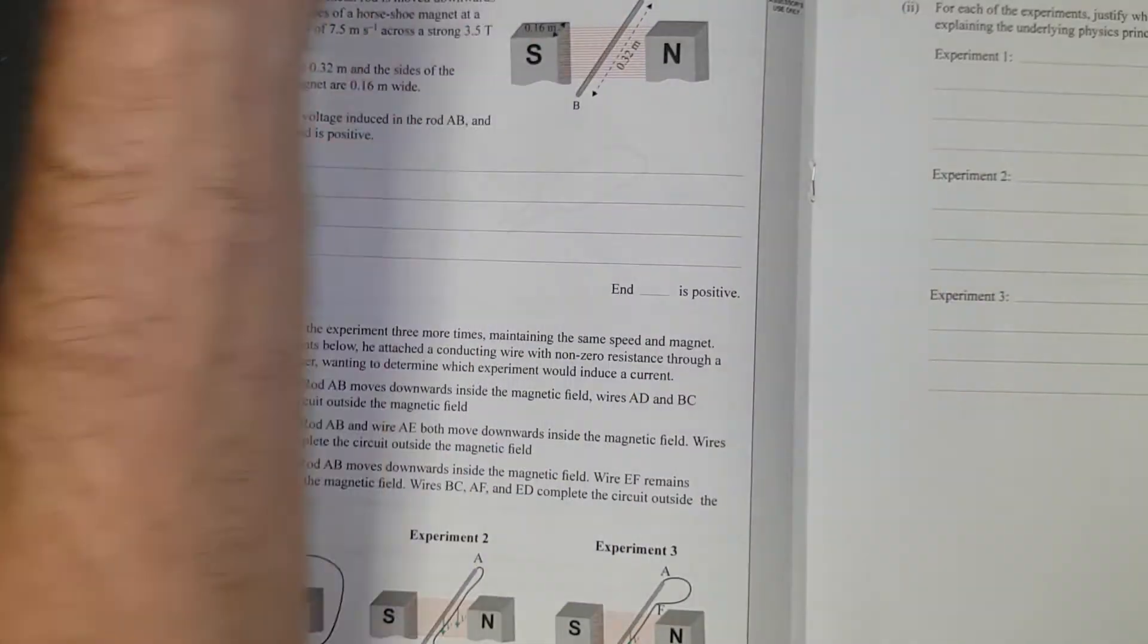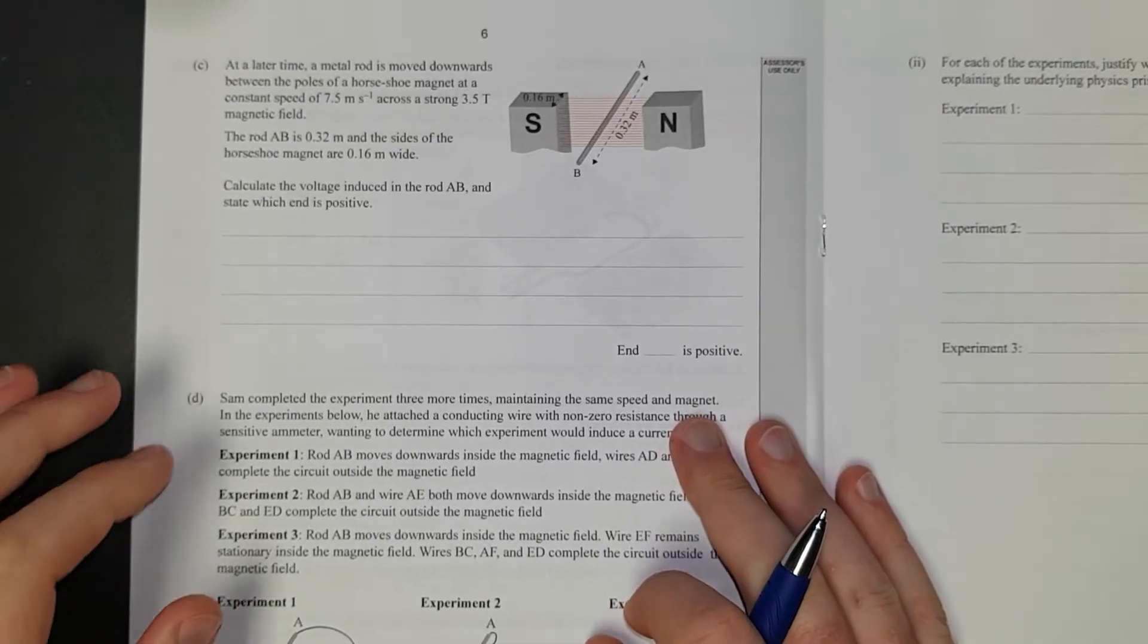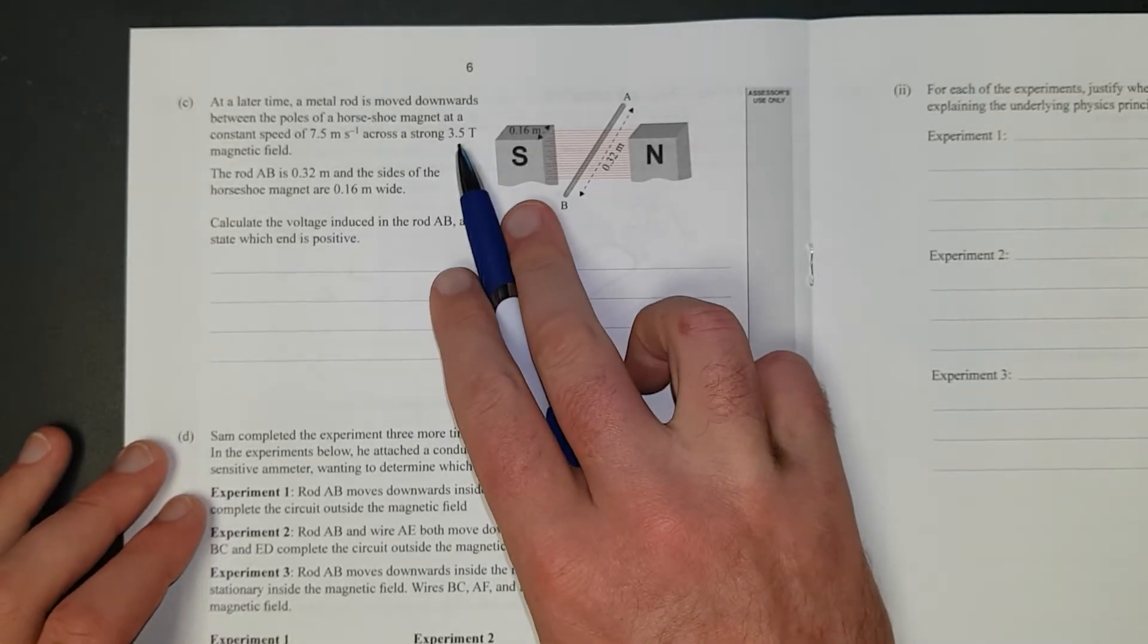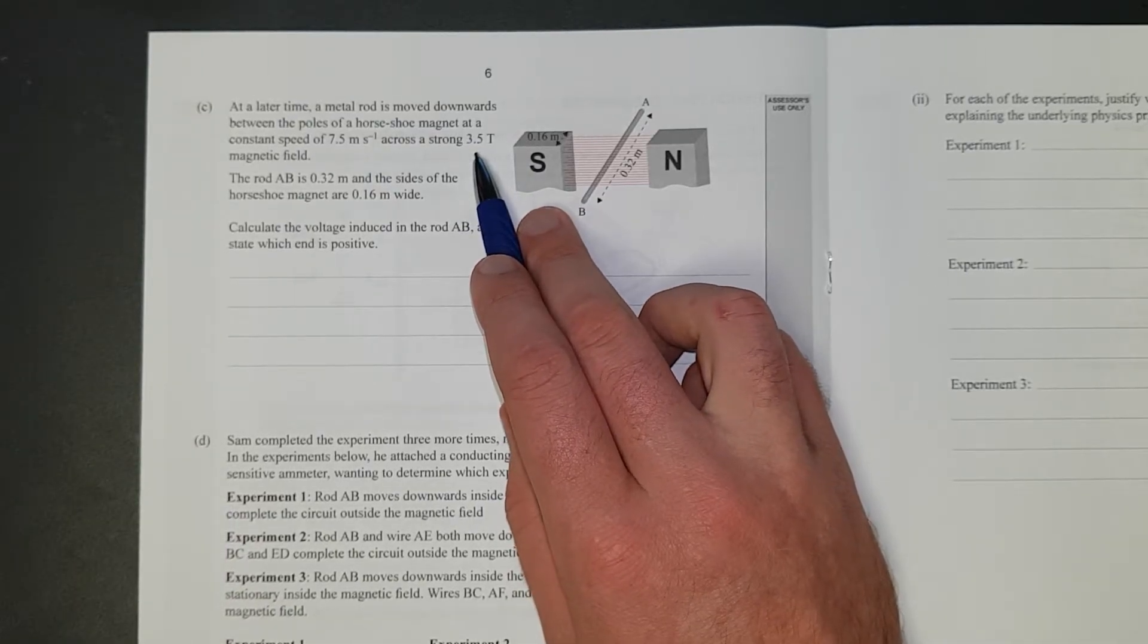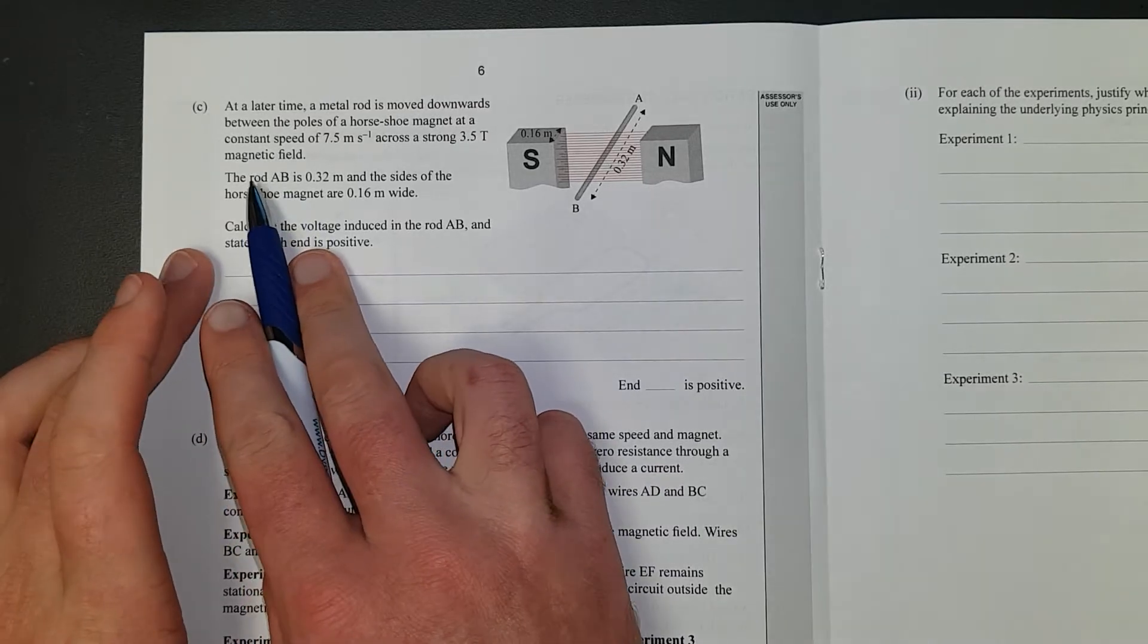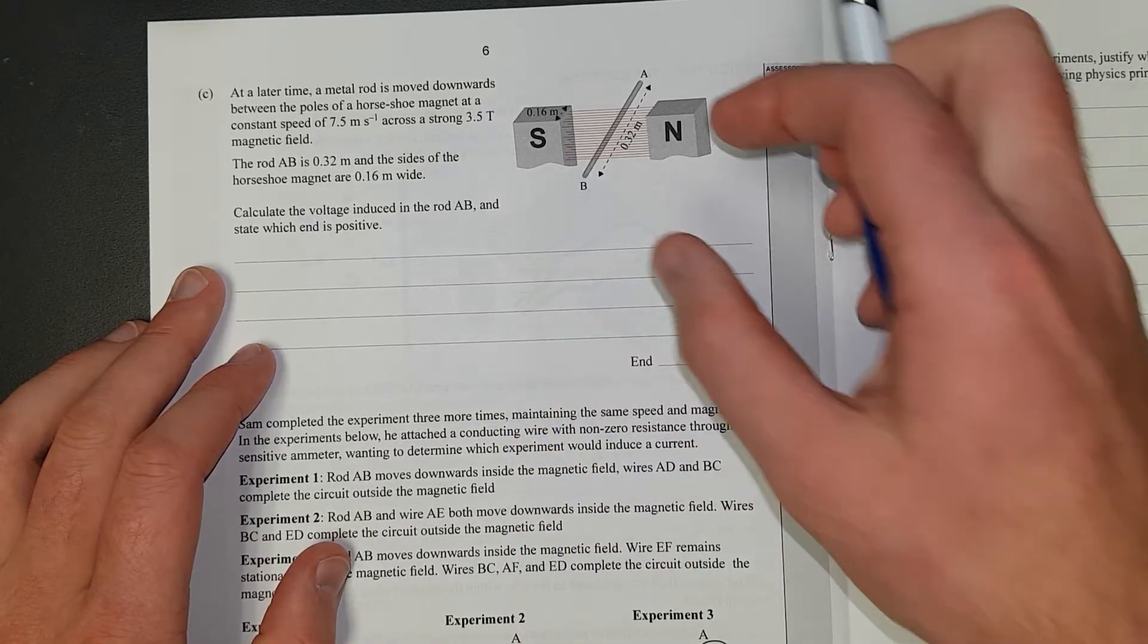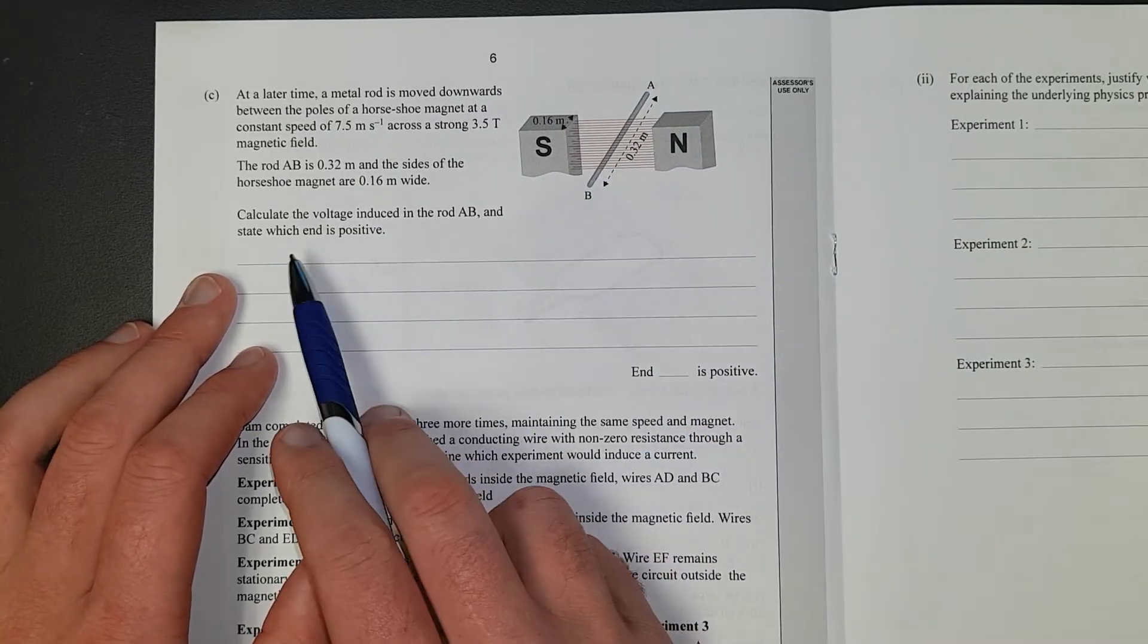Right. At a later time, a metal rod has moved downwards between a horseshoe magnet at a constant speed of 7.5 meters per second across a strong 3.5 tesla magnetic field. That is insane. 3.5 tesla. You can, I'm not even sure if you can buy that without making, actually, you can buy really huge ones at 3.5 tesla. That's like MRI strength. Whatever. The rod's 0.32 meters. Horseshoe magnets, that wide. So, it's not the length of the rod, it's just the length of how much rod is in the field. So that's why they're given this length here, because that'll stump you.